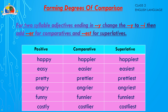For two-syllable adjectives ending in 'y,' change the 'y' to 'i,' then add '-er' for the comparative and '-est' for the superlative. For example: happy → happier → happiest; easy → easier → easiest; pretty → prettier → prettiest; angry → angrier → angriest; funny → funnier → funniest; costly → costlier → costliest.